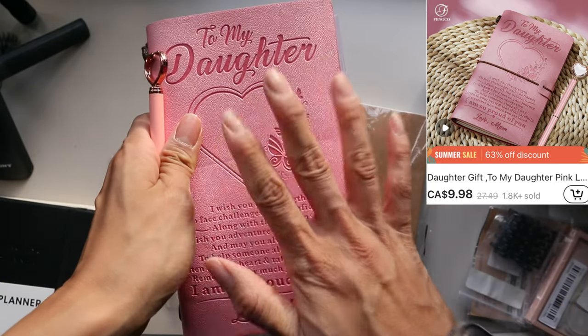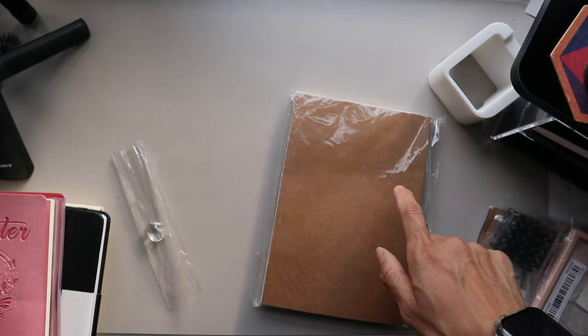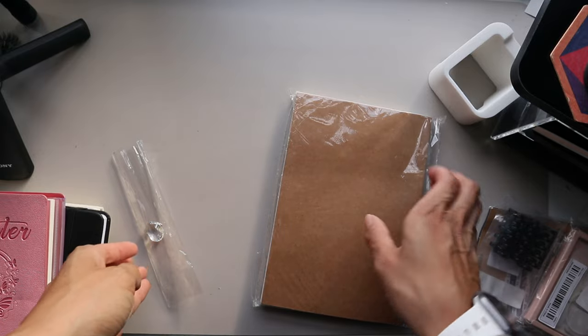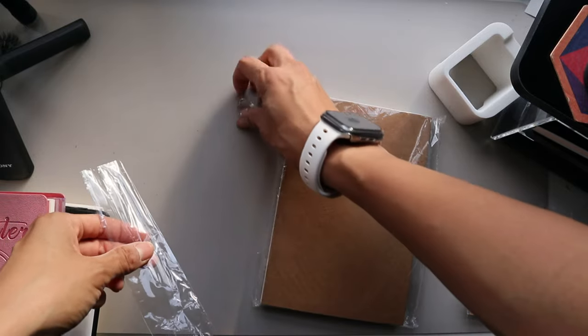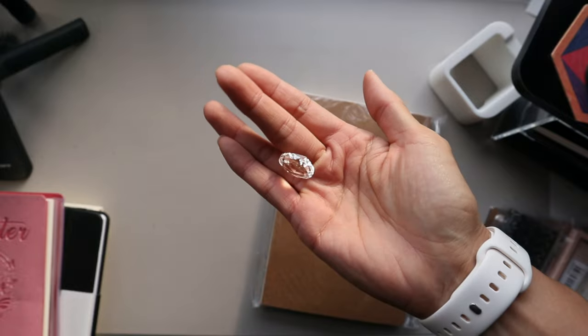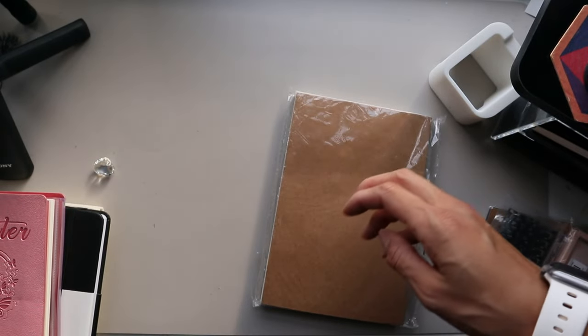My camera got cut off, but I love this. And now we're going to go on to this last notebook item that I got. Oh, and it comes with like a little jewel, like a heart gem. That's cool.